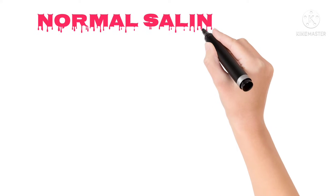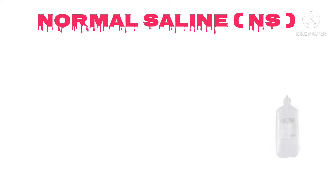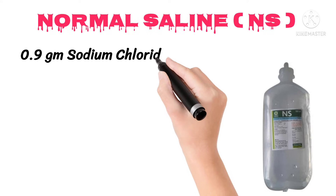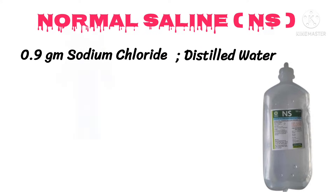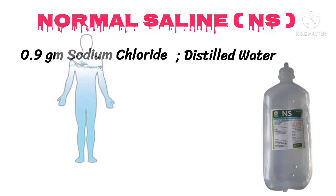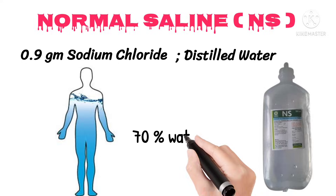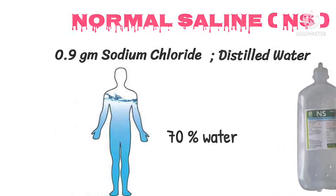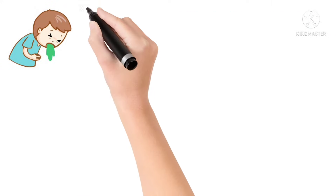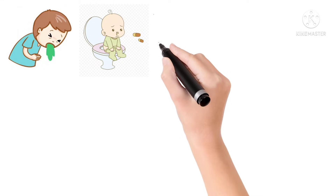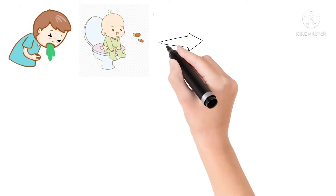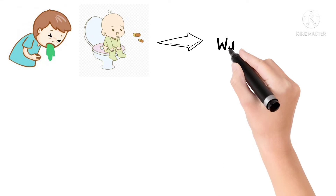First we are going to discuss about the normal saline. Normal saline contains 0.9 grams of sodium chloride and distilled water. As we all know, our body contains approximately 70 percent of water. So in conditions of dehydration, like in conditions of vomiting and diarrhea, there is excessive fluid loss, that is water loss.